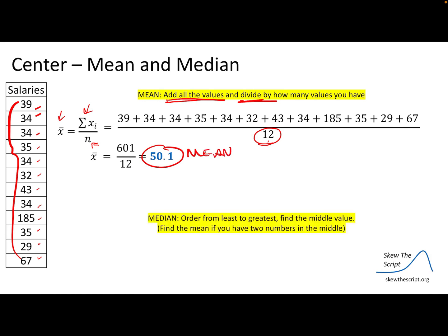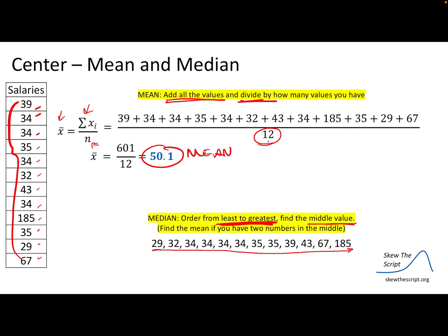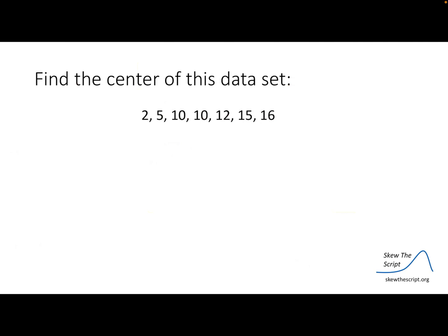To find the median, you order the numbers from least to greatest — this is very important — and then find the middle value. With my numbers organized from least to greatest, I cross them off from low to high. My median falls between 34 and 35, so I add those up and divide by 2, giving a median of 34.5. Now find the center of this data set — the mean is 10 and the median is also 10.